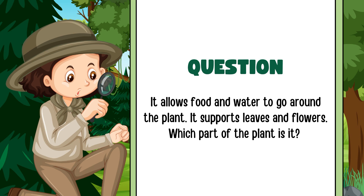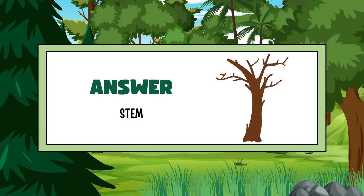Next, question number three: it allows food and water to go around the plant, it supports leaves and flowers. Which part of the plant is it? The answer is stem.